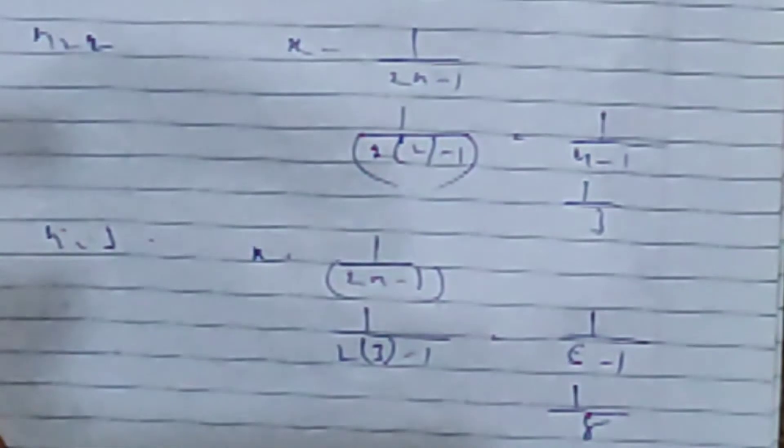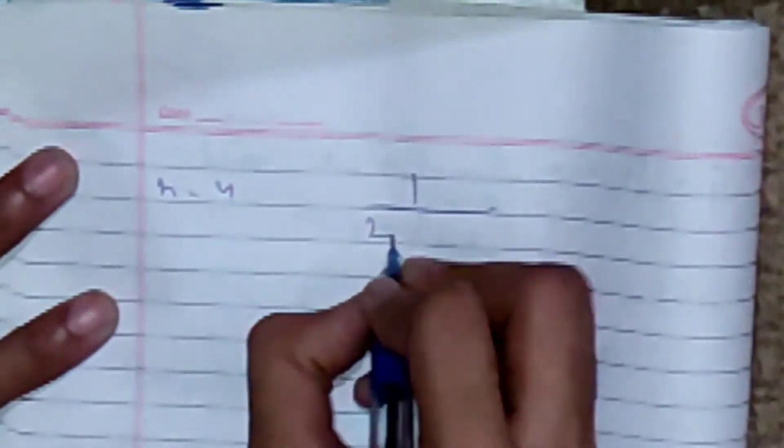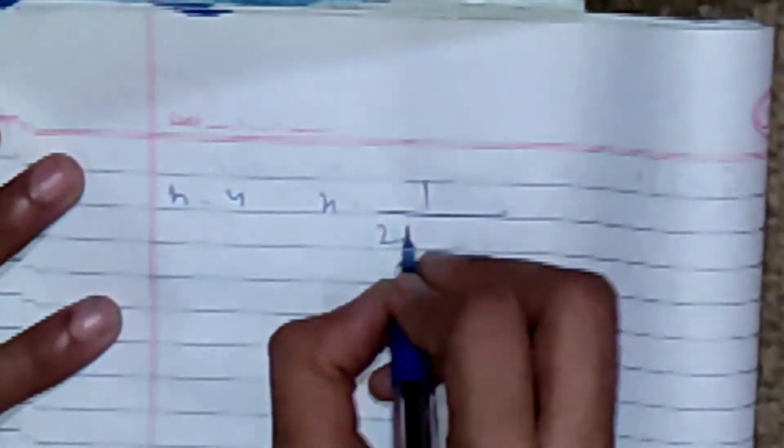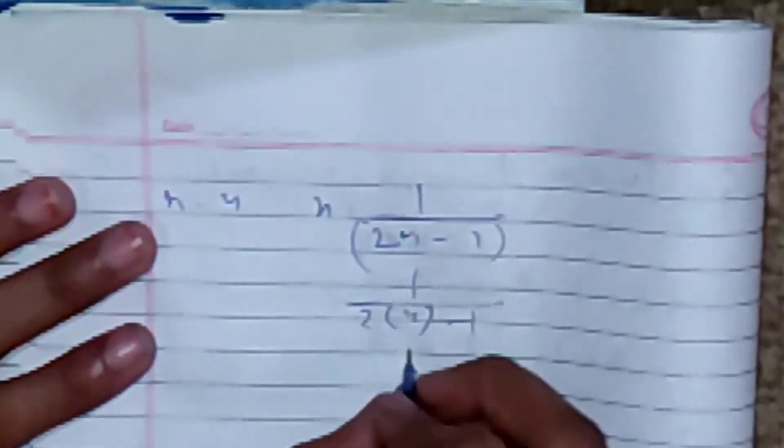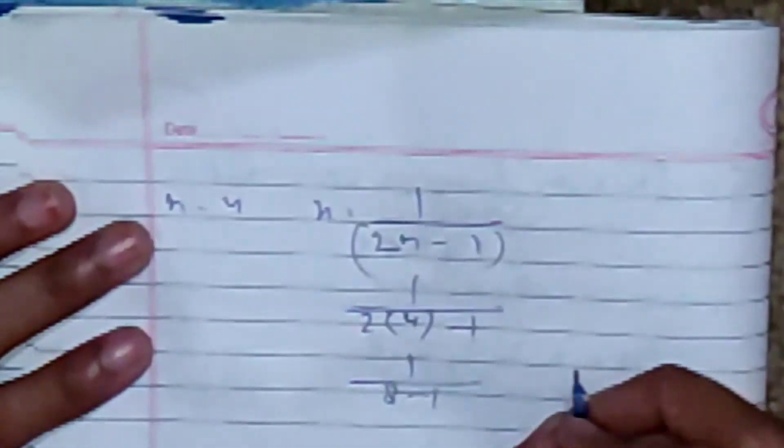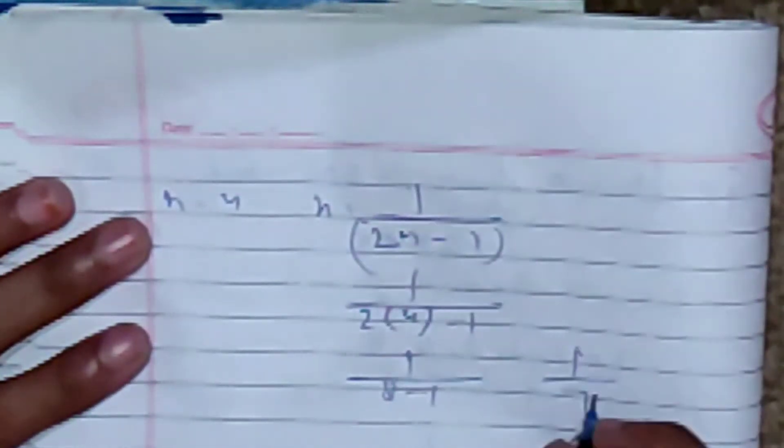N is equal to 4. X is equal to 1 by 2n minus 1. 1 by 2 times 4 minus 1: 1 by 8 minus 1 equals 1 by 7.